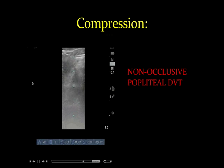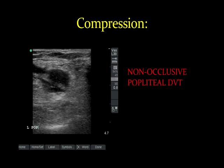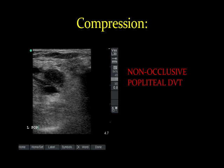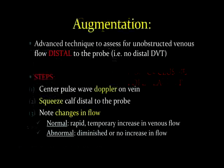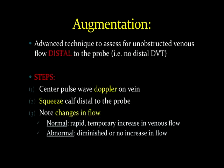Augmentation is a supplementary technique to compression but not a standalone technique. What we do here is evaluate for unobstructed venous flow distal to the probe — in other words, no distal DVT. We place the probe over the vein in question and center the pulse wave Doppler gate in the middle of the vein. Then we squeeze the calf distal to the probe, which will push blood flow through the vein as it returns. Normally we would have a rapid temporary increase in venous flow, but if there is deep venous thrombosis, many times we will notice diminished or no increase in flow during augmentation.